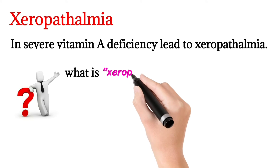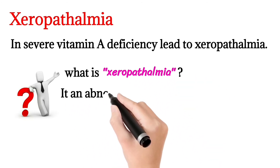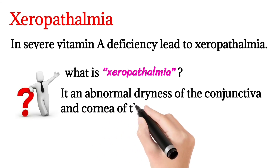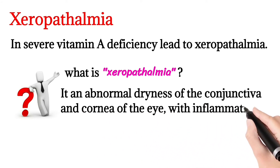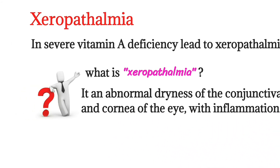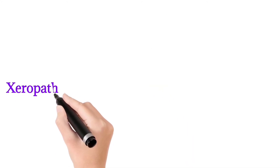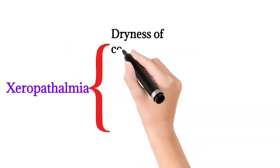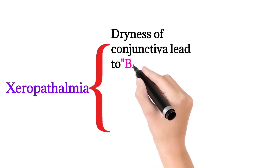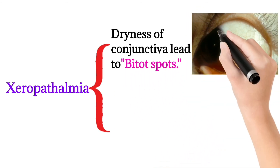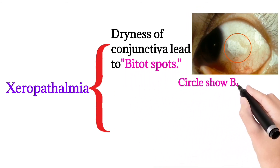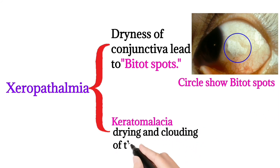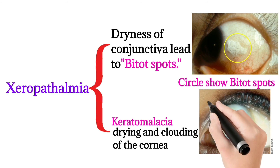Severe Vitamin A deficiency leads to xerophthalmia, which involves dryness of the conjunctiva and cornea of the eye with inflammation. In xerophthalmia, dryness of the cornea or conjunctiva leads to Bitot's spots. Bitot's spots involve drying and clouding of the cornea, as seen in the given figure.